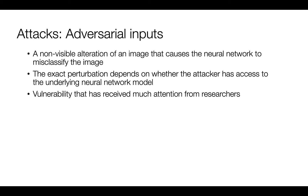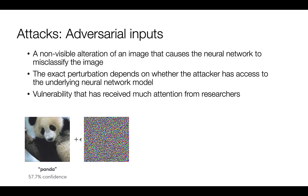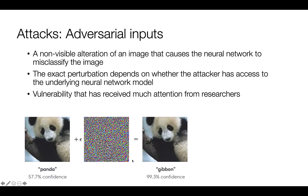A famous example, other than the tabby cat and guacamole, is taking a panda — one of my favorite animals — and applying an epsilon, a kind of error, with a little bit of random noise. It recognizes the panda with 57.7% confidence, and then it produces an image which is identical to the original from a human perspective, but it's now recognized as a gibbon with 99.3% confidence.